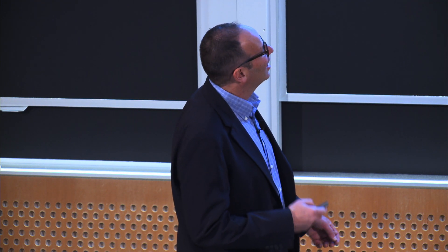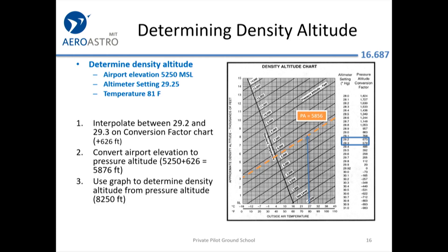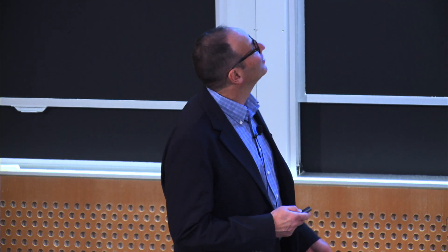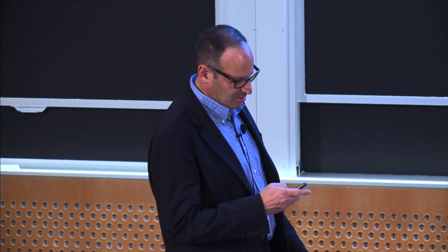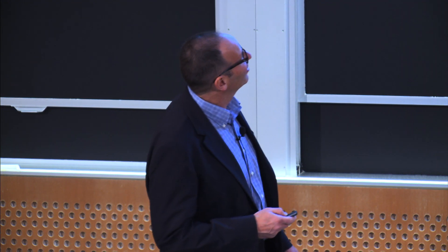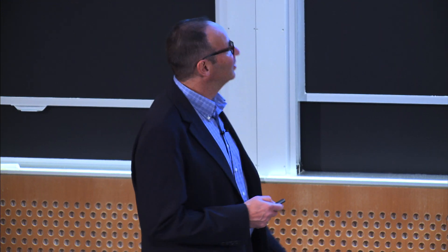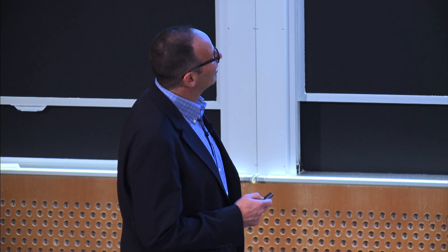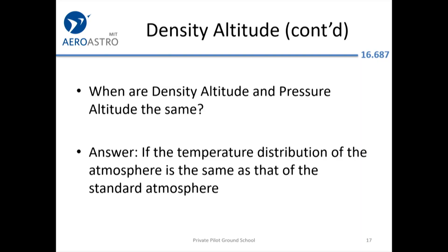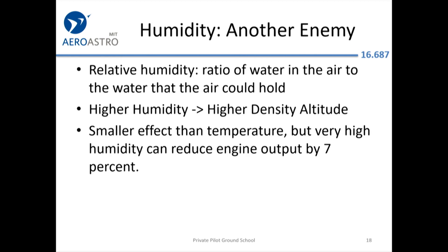At 5,000 feet it's only supposed to be 7 degrees Celsius. Here we said it was about 27 degrees Celsius — that's ISA plus 20, just like I said. If you look at jet performance charts, you have ISA minus 20, ISA, and ISA plus 20. Pressure altitude and density altitude are the same when the temperature distribution is the same as that of the standard atmosphere — I think that's an FAA test question.